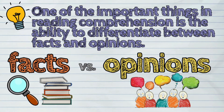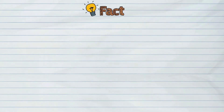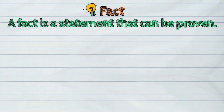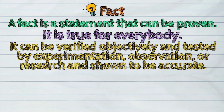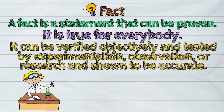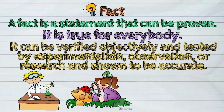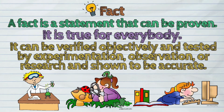First, let us learn what a fact is. A fact is a statement that can be proven. It is true for everybody. It means it can be verified objectively and tested by experimentation, observation, or research and shown to be accurate.